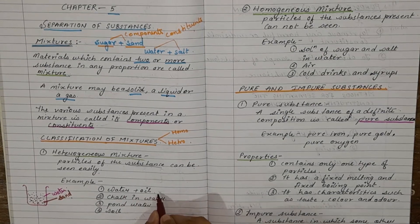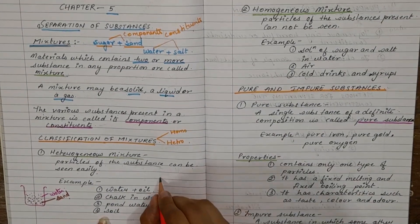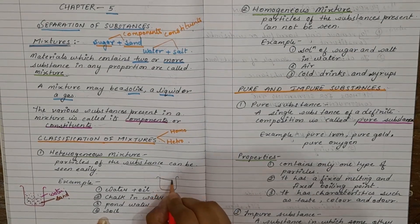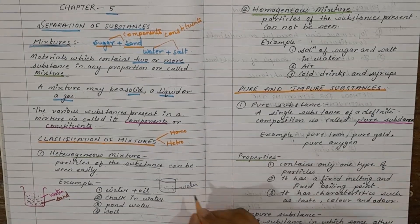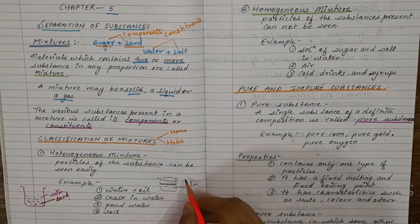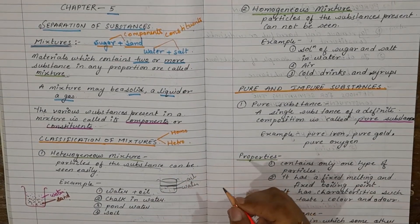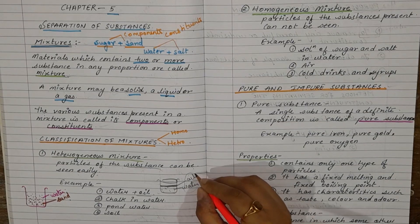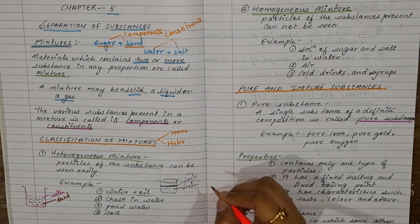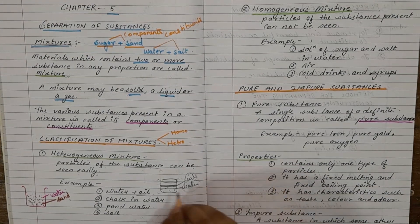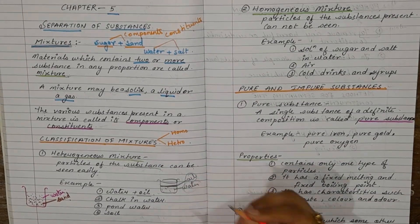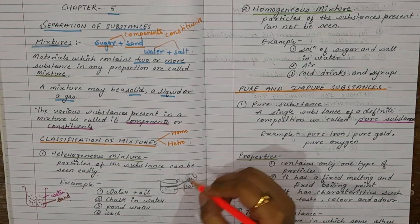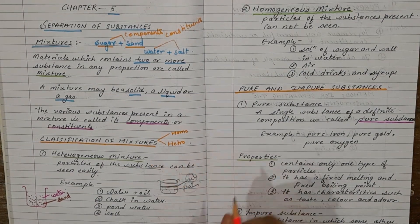Another example is water and oil. When we mix water and oil, the layer of oil floats on top. Oil is lighter than water, so they never mix — this is known as immiscible liquids. The layer of oil always floats on the surface of water and is easily visible to us. That is why it is also a heterogeneous mixture.